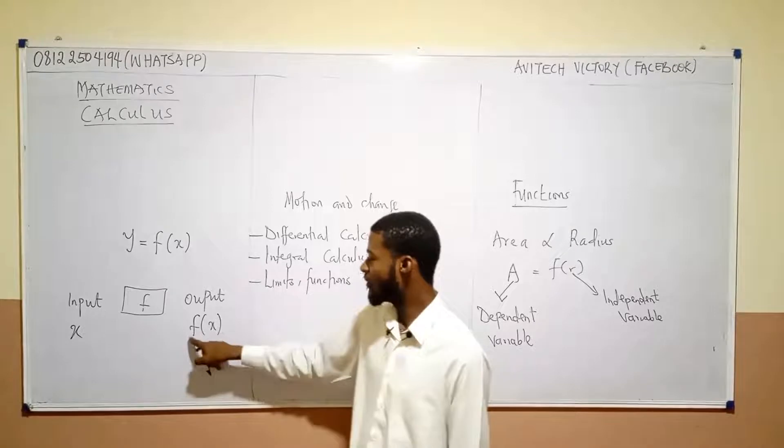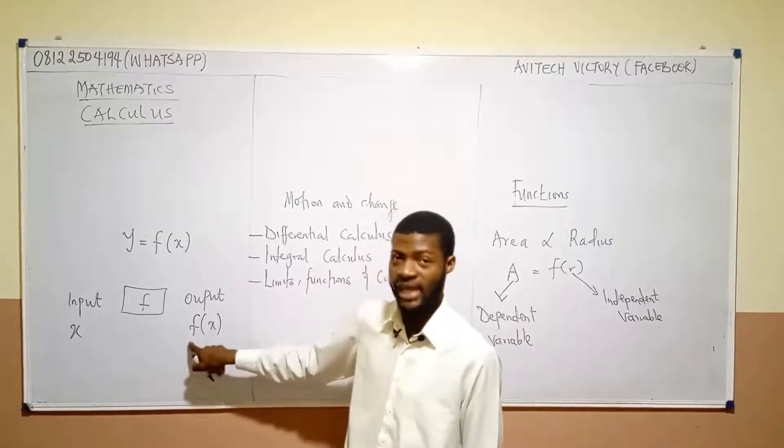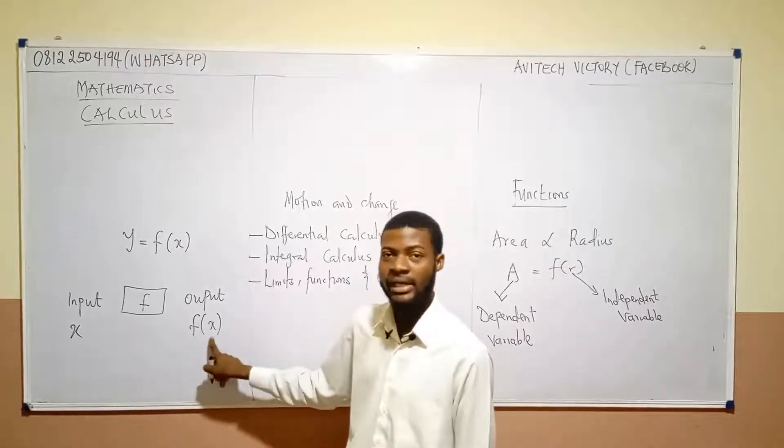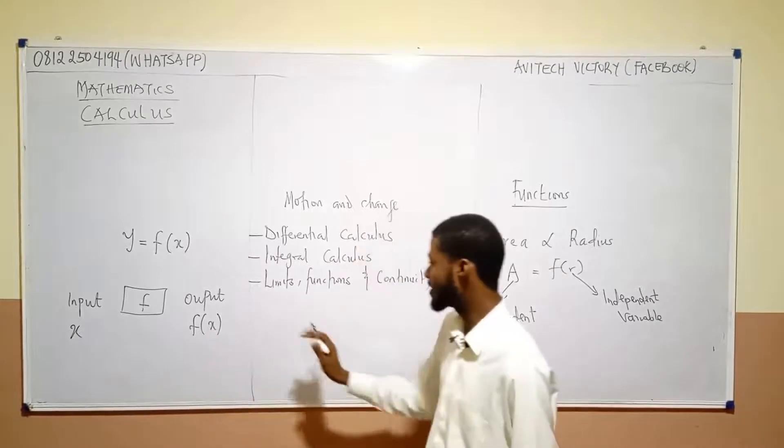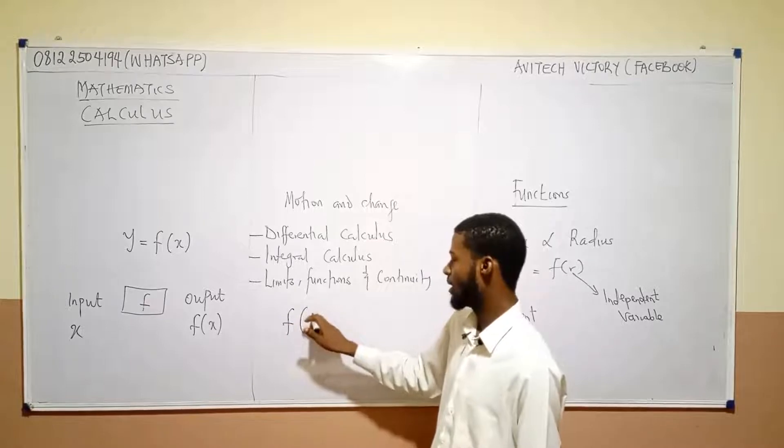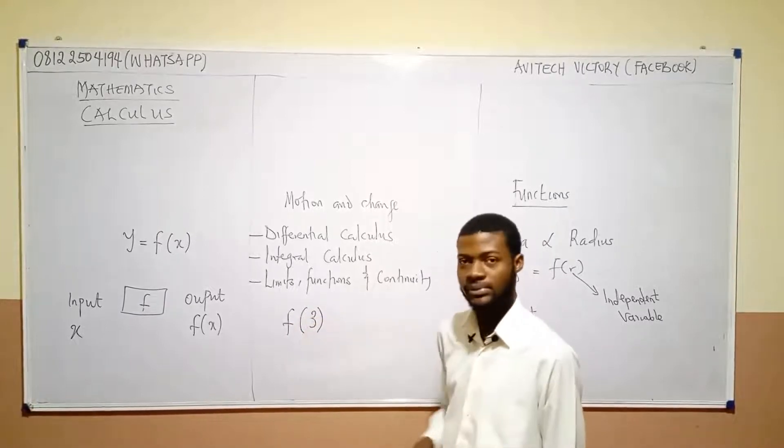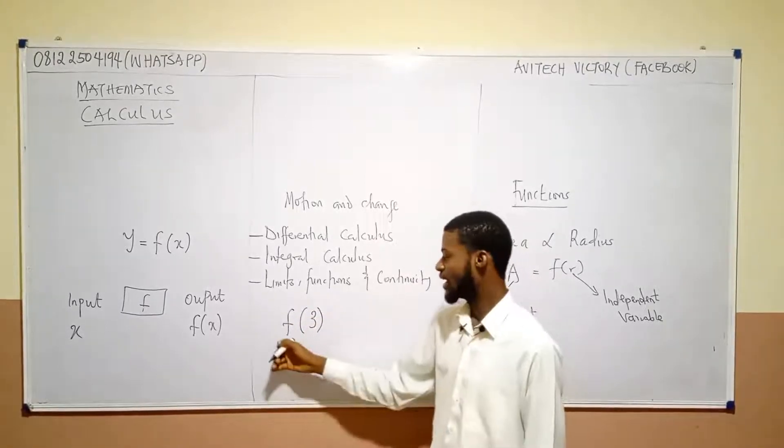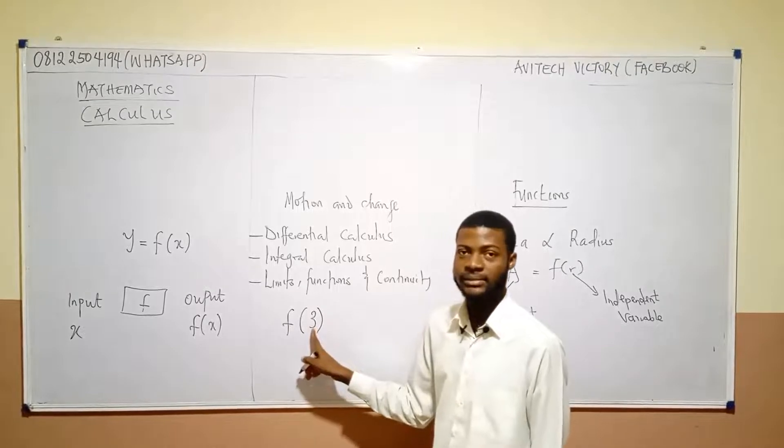So, what this f of x means is the value of f at x. So, many a times, you would have seen mathematical expressions written as f brackets 3. What it means is, what is f at 3? That's the meaning.